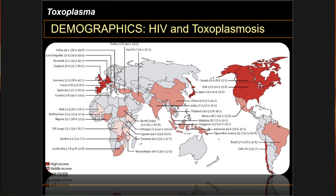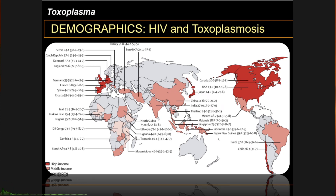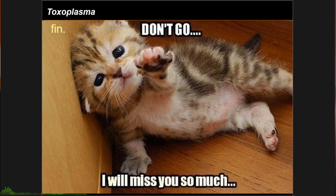The worldwide prevalence of co-infection of HIV and toxoplasmosis is around 38%. Sub-Saharan Africa accounts for the highest prevalence of co-infection. All income bracket countries are affected, but usually low-income countries generally have higher co-infection rates. That concludes the lecture on Toxoplasma, and that also ends the parasitology lecture series on coccidians.